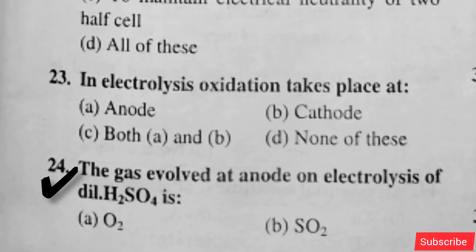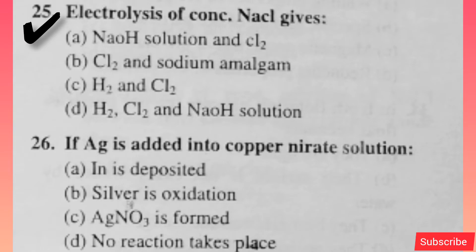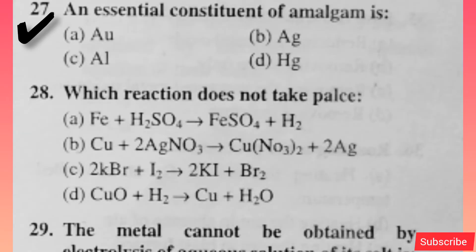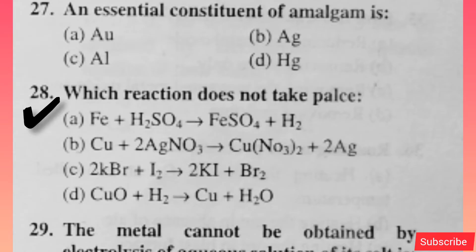The gas evolved at anode on electrolysis of dilute H2SO4 — option A is right. Electrolysis of concentrated HCl gives — option D is right. If Ag is added into copper nitrate solution — option D is right. An essential constituent of amalgam is — option D is right.